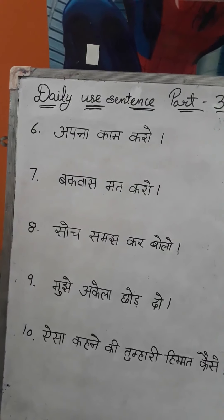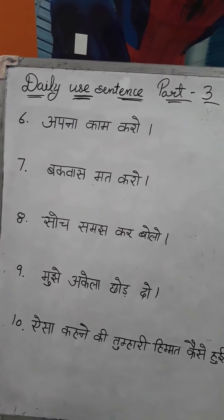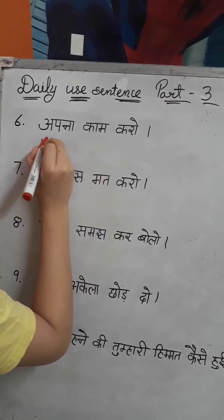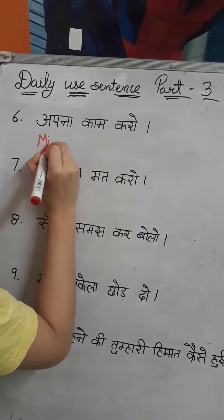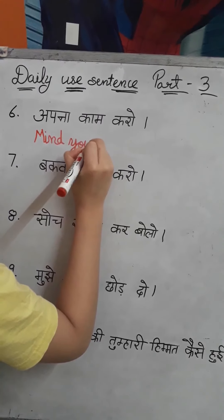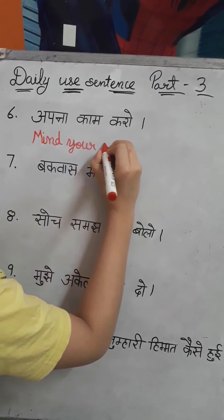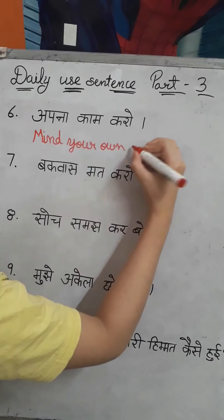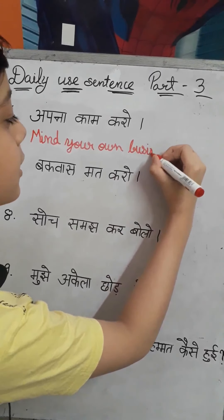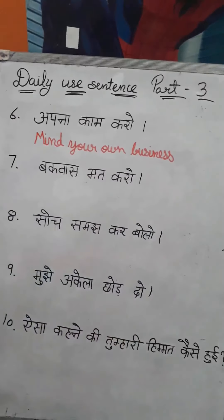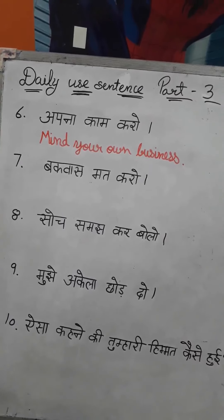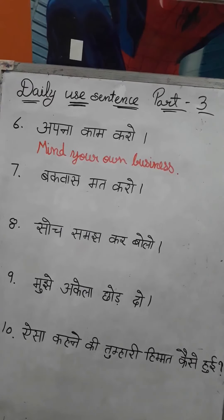So my sixth sentence is: Apna kaam karo. We will write it in English like: Mind your own business. One more time — Mind your own business.